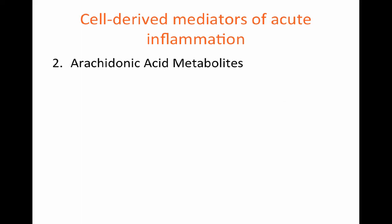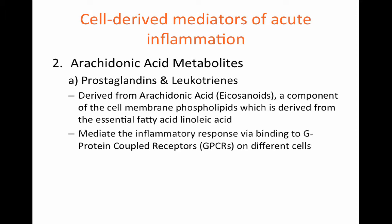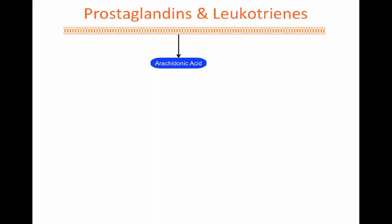Arachidonic acid metabolites include prostaglandins and leukotrienes. They are derived from arachidonic acid, or eicosanoids, which is a component of the cell membrane phospholipid, derived from the essential fatty acid linoleic acid. These metabolites mediate the inflammatory response by binding to G-protein coupled receptors, or GPCRs, on different cells. Arachidonic acid is generated by cleaving membrane phospholipids via phospholipase.